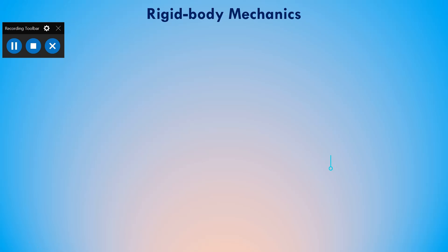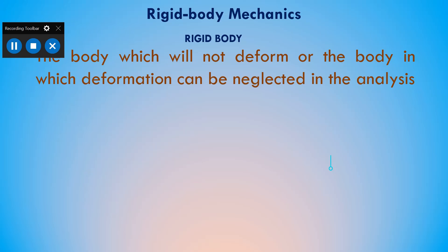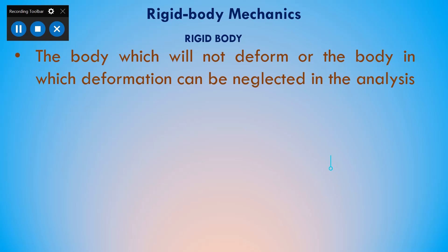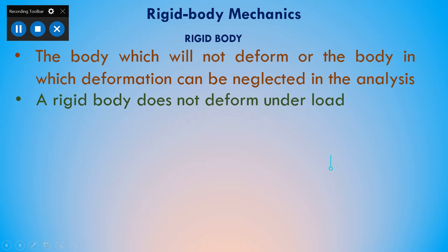In this syllabus, we mainly study mechanics of rigid bodies only — we do not study deformable bodies or fluids. A rigid body is any body that does not deform when an external force acts on it. The body in which deformation can be neglected is known as a rigid body. Any rigid body does not deform under load.